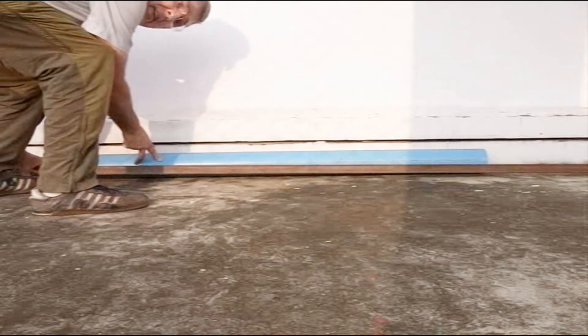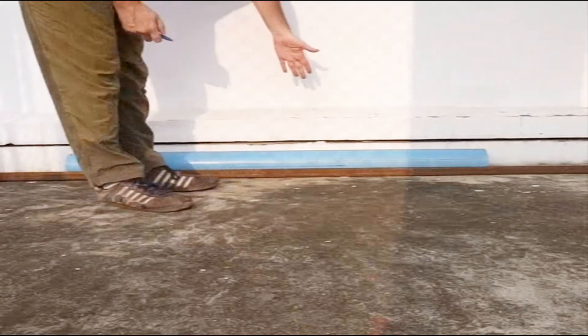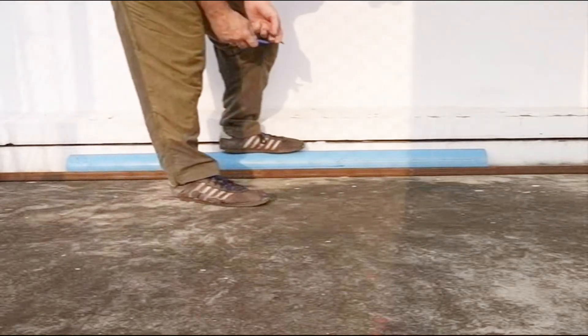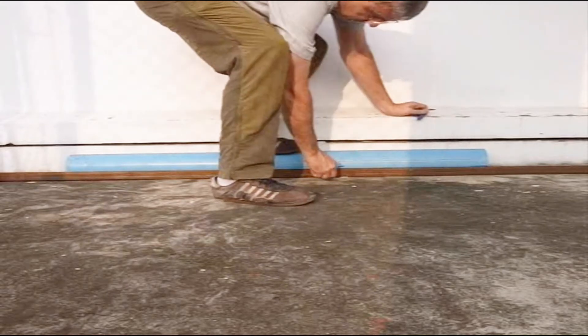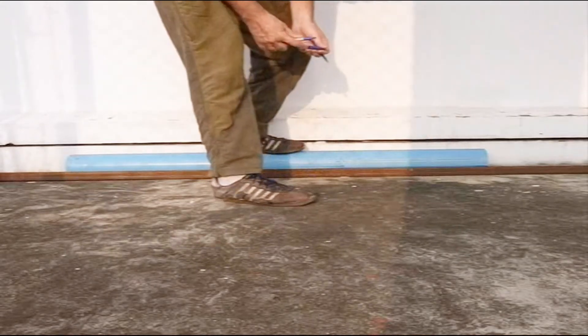What I did is I just used an angle iron like this, set it firmly up underneath there, underneath the pipe, up against a nice straight wall. Step on it to take any curve out of the pipe and just run your marker along it and you've got your line.